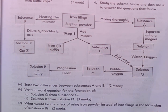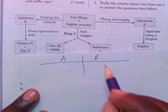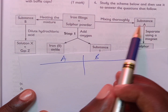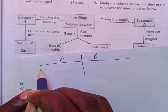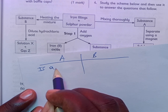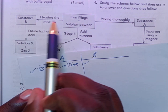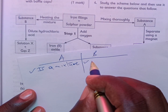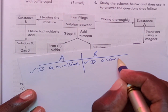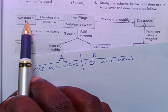Let us now answer the questions. Part A: state two differences between substance A and substance B. Remember, substance A is obtained by mixing iron and sulfur physically, meaning A is a mixture. Substance B has been formed by chemically combining iron and sulfur to give a compound, so B is a compound — that is one difference. A second difference relates to the heat energy required in forming substance B.